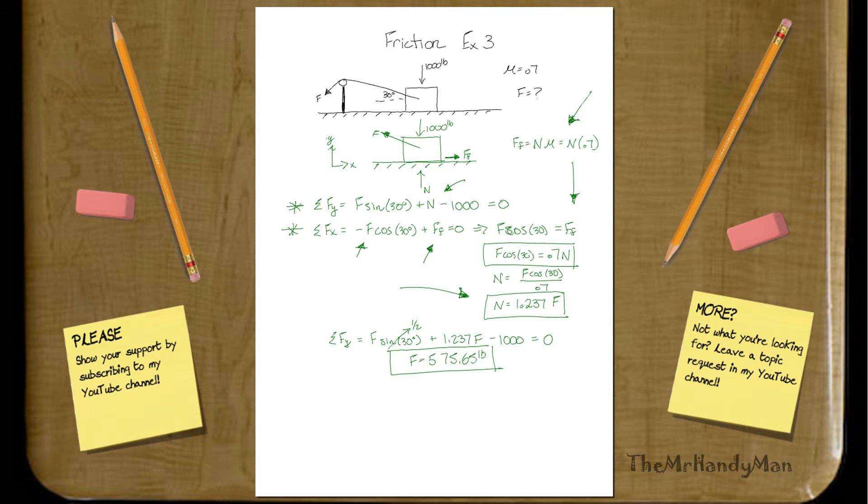575 pounds, pretty good. Realize that just pulling it sideways would have been 0.7 of that 1,000 pounds. So, it would have been 700 pounds. But, by pulling it slightly up, we are actually taking off a good 125 pounds that we need to pull.